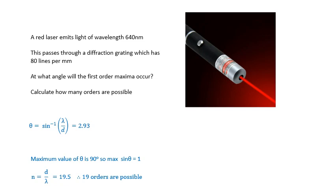How many orders are possible? This is quite a common question. Well, the maximum value of theta is 90 degrees. If you're bending around a corner, you can't bend around a corner more than 90 degrees. So sine 90 equals 1.